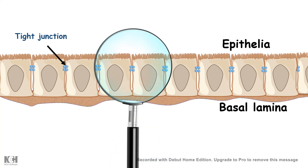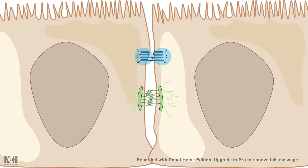Tight junctions are strategically localized more towards the apical side of the cell. Epithelial cells are polarized — they have an apical and a basolateral side, essentially the top and bottom of the cell. The top and bottom are quite different from each other. Tight junction components are mainly localized near the apical surface, while on the basolateral side you would find the adherence junction.